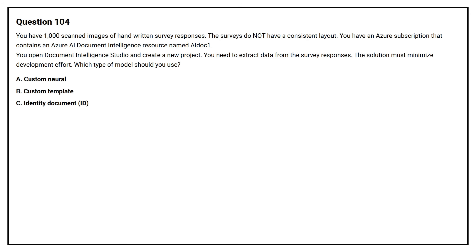Option A: Custom Neural. Option B: Custom Template. Option C: Identity Document ID. The correct answer is Option A: Custom Neural.